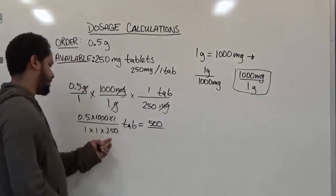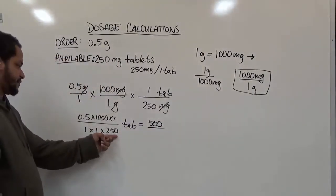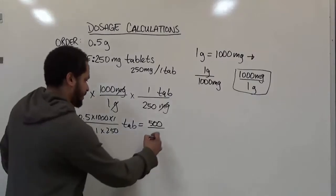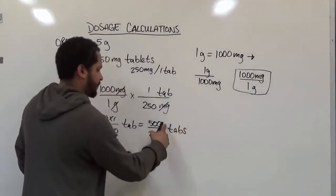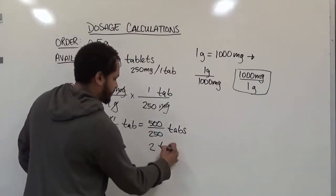Divided by 1 times anything is whatever else we have. So 250 times 1 and 1 is just 250. This is in the form of tabs. 500 divided by 250 is perfectly 2 tabs.